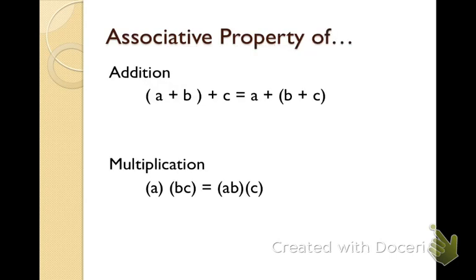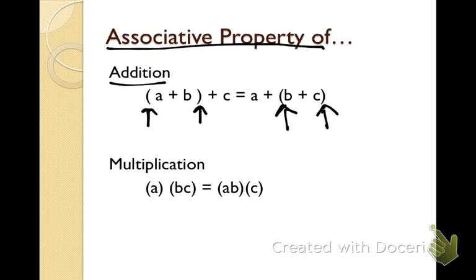Here's another way to look at the associative property. For addition: (a + b) + c is the same as a + (b + c) — we keep the same order a, b, c, but move the parentheses. I can do the same thing with multiplication: (a × b) × c equals a × (b × c). I've just changed how the numbers are grouped, and again I'm doing that to make the math easier.